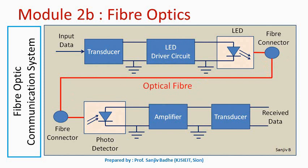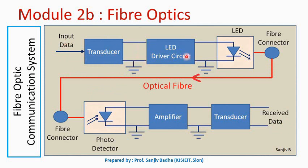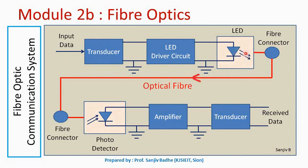To transmit the signal from one end to the other end, the schematic of a fiber optic communication system can be seen on the screen. Input data is fed to the transducer, which converts this data into an electrical signal. This electrical signal is used to operate a light emitting diode, and we get light as the output. So the data to be transmitted is converted into the form of an optical signal.